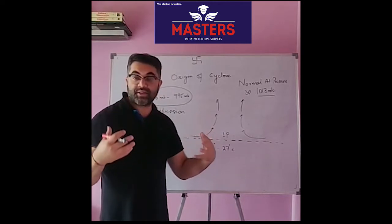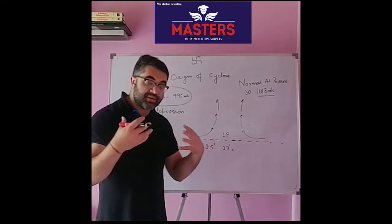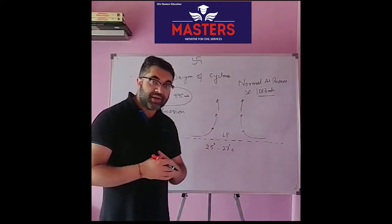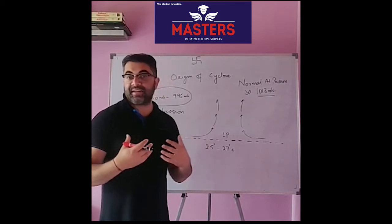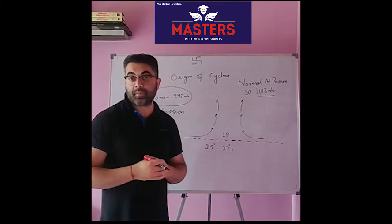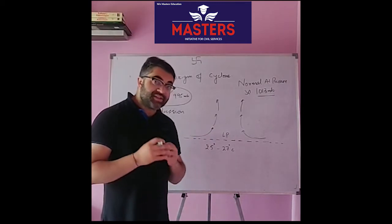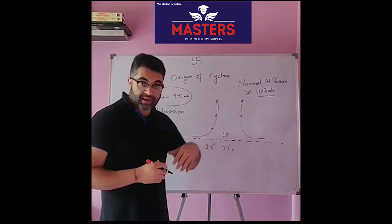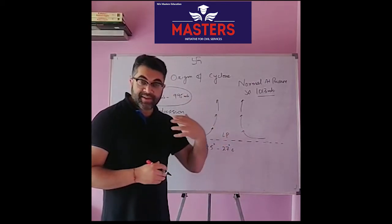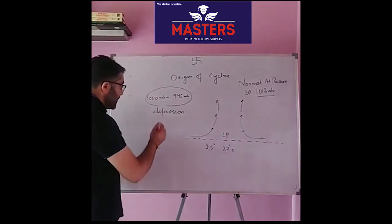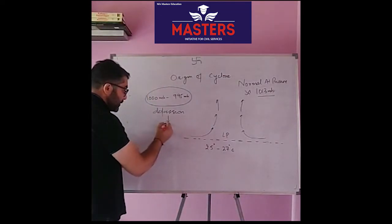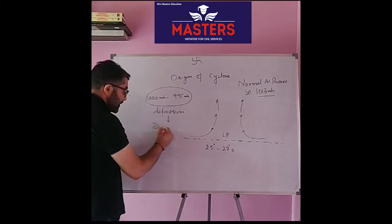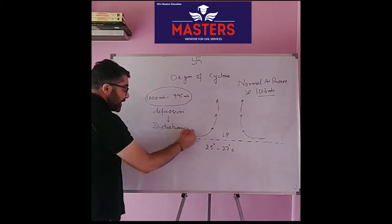Wind speed slightly increases. If conditions remain the same and the temperature further increases, this depression is referred to as an atmospheric disturbance, and wind speed increases slightly further.